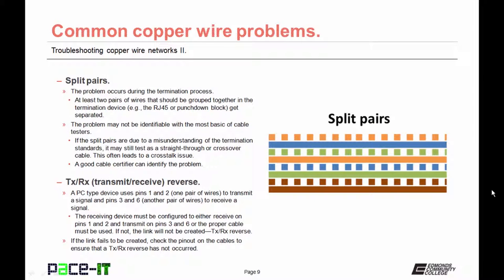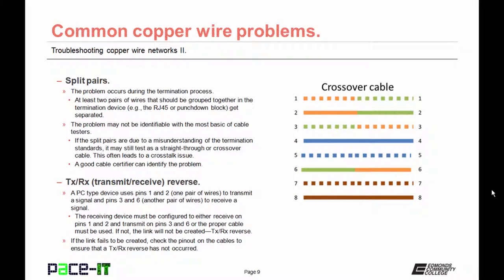When creating your own cables, you may end up with split pairs. The problem occurs during the termination process. At least two pairs of wires that should be grouped together in the termination device get separated. The problem may not be identified with the most basic of cable testers — they will still test as having continuity from end to end. If the split pairs are due to a misunderstanding of the termination standards, it may still test as a straight-through or crossover cable. This often leads to a crosstalk issue. A good cable certifier will always identify the problem.